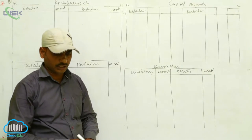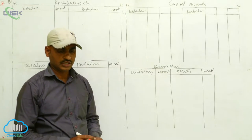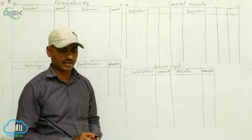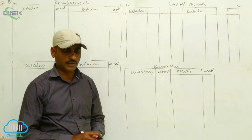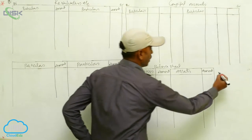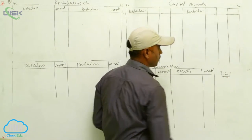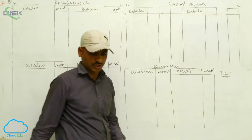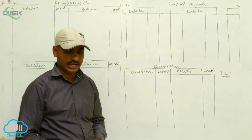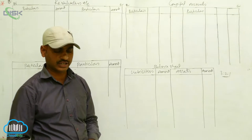Problem number 13. In this problem, Chandra, Bhaskar, and Rahu are partners sharing profits and losses in the ratio of 3:2:1. So the profit and loss sharing ratio is 3:2:1. Their balance sheet as on 31st March 2015 was as given.